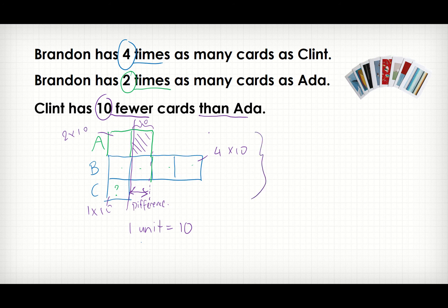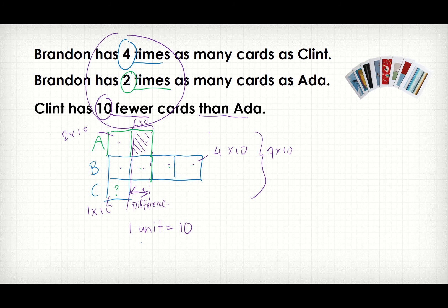Altogether they have seven units — seven times ten. Some of you may have this question in your mind: if you see 'fewer than' or 'more than' we draw a model, and if you see 'two times as many cards' you also draw a model — so if you see all three pieces of information together, where do we start? You'll notice that we always started with the 'times as many as' information before the 'fewer or more than' information.